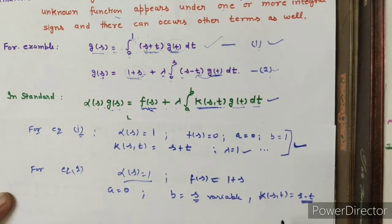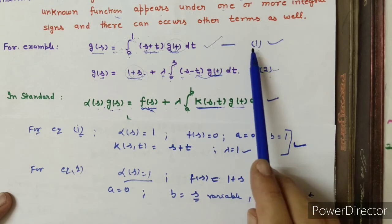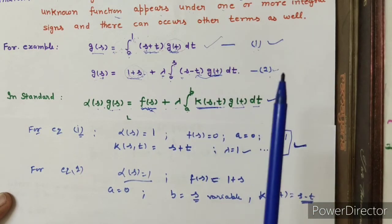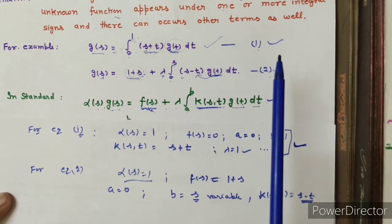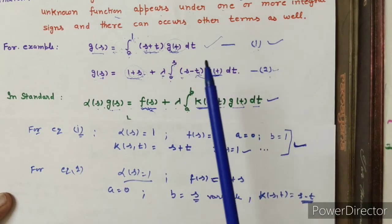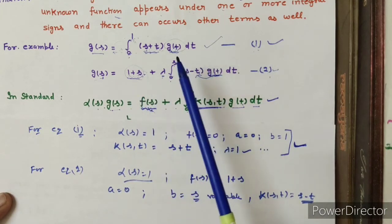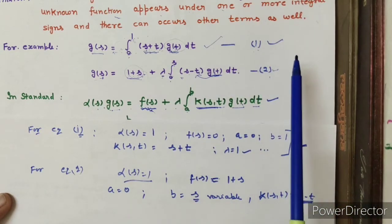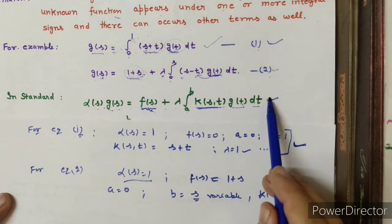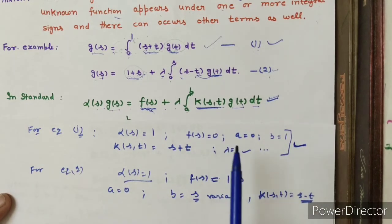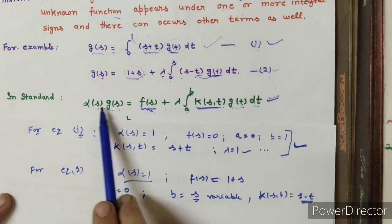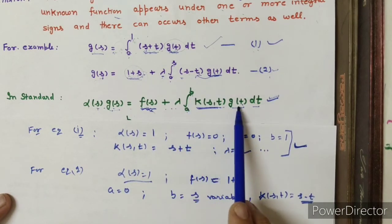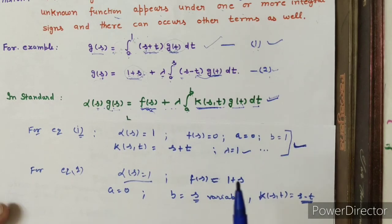We have done the first definition of integral equations. If this comes in the exam in the compulsory part, you can be asked for 1 mark. You will write first the definition, then always write the standard form: alpha(s) · g(s) = f(s) + lambda · integral from a to b of k(s,t) · g(t) dt, where g(s) is the unknown function. The functions f(s), alpha(s), and k(s,t) are given in the equation.